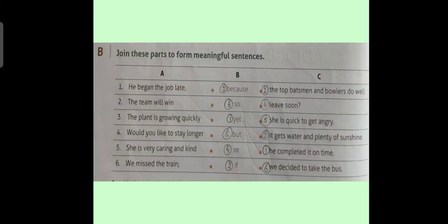Exercise B. Join these paths to form meaningful sentences. Dear students, as you can see, that there are different phrases and words which are given in column A, B and C. We have to match these columns to form meaningful sentence. Firstly, we are taking number 1 sentence, i.e. in column A.